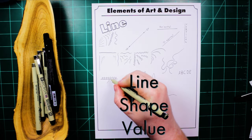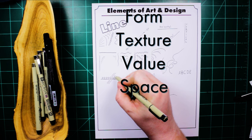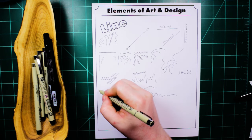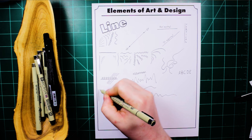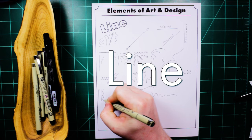Did you know there are seven basic building blocks of art which can be found in every single artwork, whether you tried to put them there or not? These seven building blocks are known as the elements of art and design, and today we'll be taking a look at the first and simplest element, line.